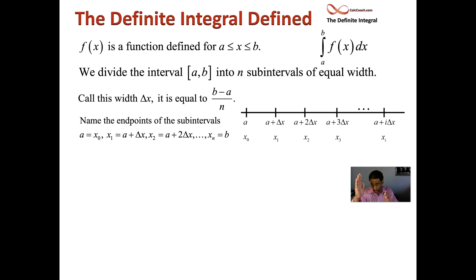That part of the interval, that right hand part of that sub interval, the i sub interval is found by taking a and adding i copies of delta x. So x one is one copy of delta x, x two is two copies of delta x added to a, x three is three copies of delta x added to a. So x i is i copies of delta x added to a.